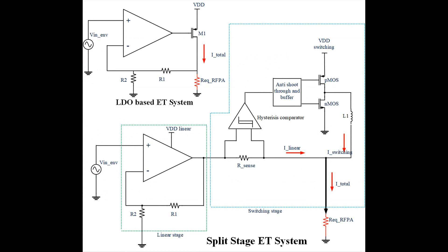These are the two schematics, the block diagram schematics of the two types of envelope trackers. One is the split stage, another is the LDO based. One can see in the LDO based it consists of an op-amp in a feedback configuration and a power transistor, and the red color resistor shows the equivalent resistance of a power amplifier.